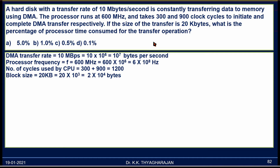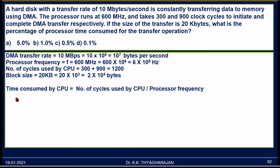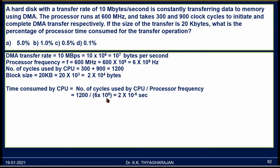What is asked here is the percentage of processor time consumed for transferring the data. First, we calculate the time consumed by the CPU. The number of cycles is given, and the time consumed by the CPU equals number of cycles divided by the processor frequency: 1200 ÷ (6 × 10⁸) = 2 × 10⁻⁶ seconds.